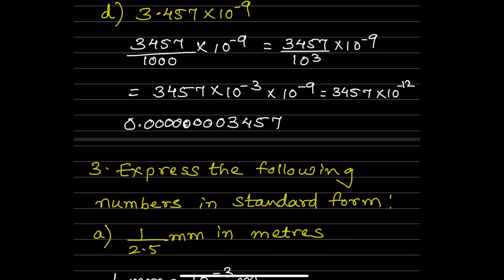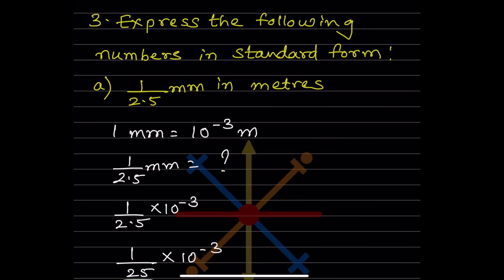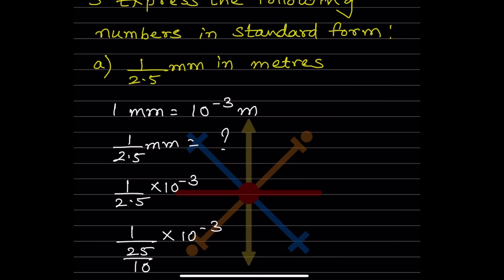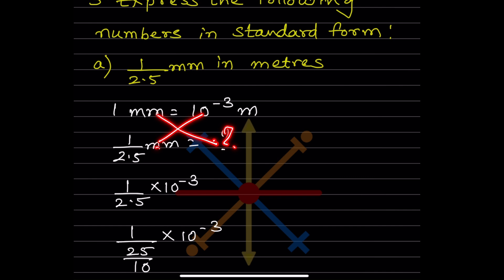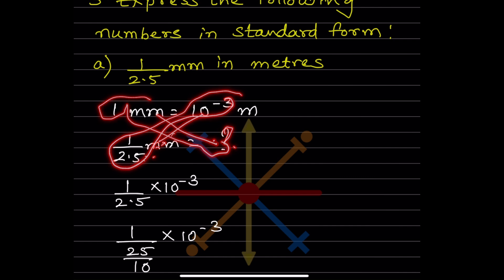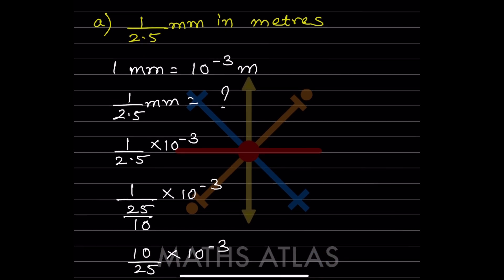Express 1/2.5 mm in meters. The key conversion is 1 mm = 10^-3 m. So 1 mm below corresponds to 10^-3 m. We cross-multiply: 1/2.5 mm becomes 1/(2.5 × 10^3) in meters, writing it as 1 divided by 2.5 × 10^3.